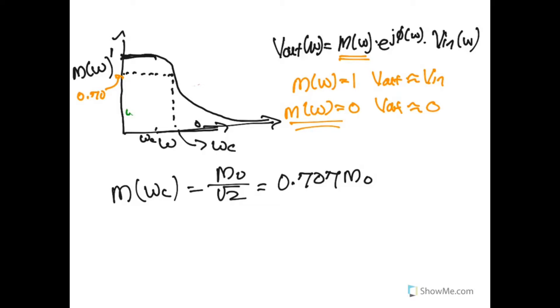So if I have a signal that's coming in at 1 volt, at the point of the corner frequency, it should be at 0.707 volts.